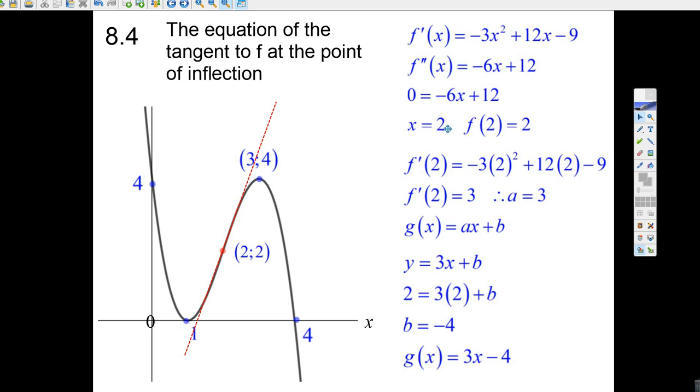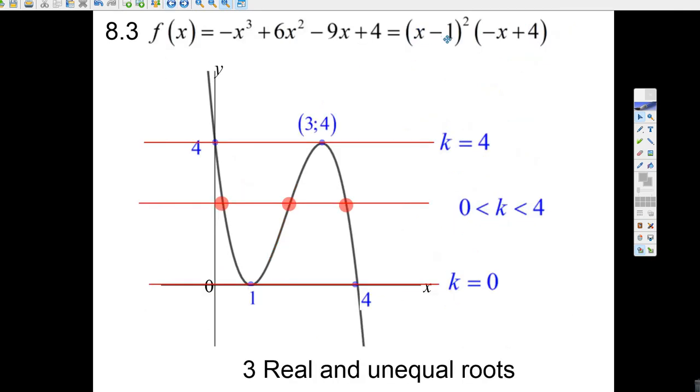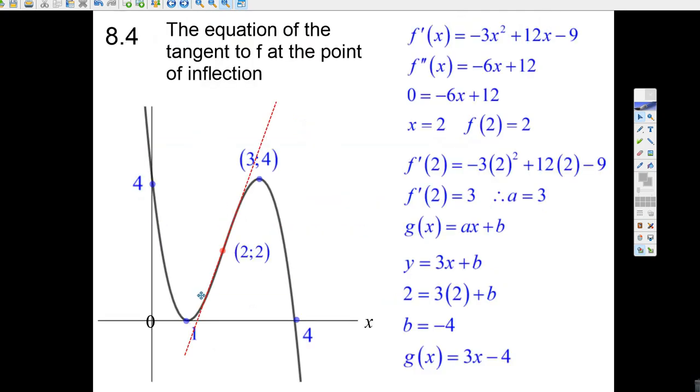Then we take 2, and we put it back into the original function. You can see if you go 2 minus 1, that's 1. Minus 2 plus 4 is 2. And multiplied together, 1 squared multiplied by 2, it's just 2.